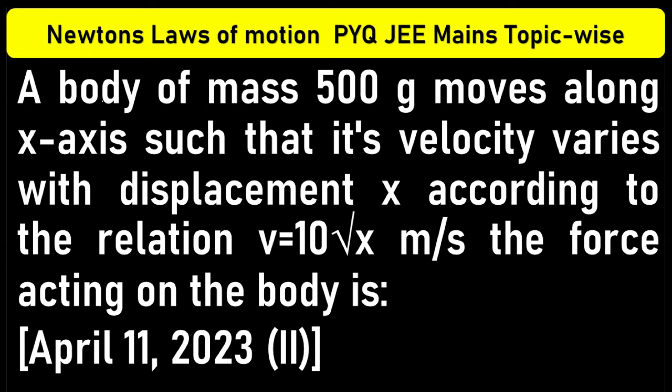The body of mass 500 grams moves along x-axis such that its velocity varies with displacement x according to the relation v equals 10 root x. The force acting on the body is: